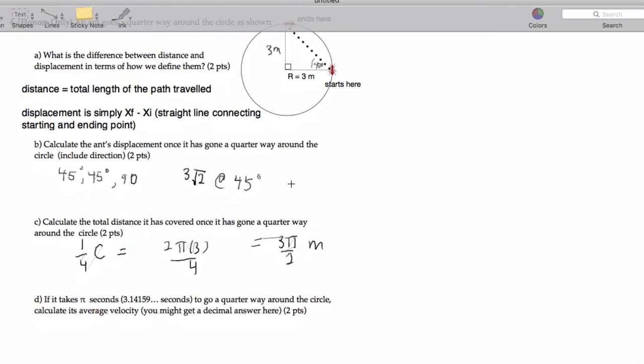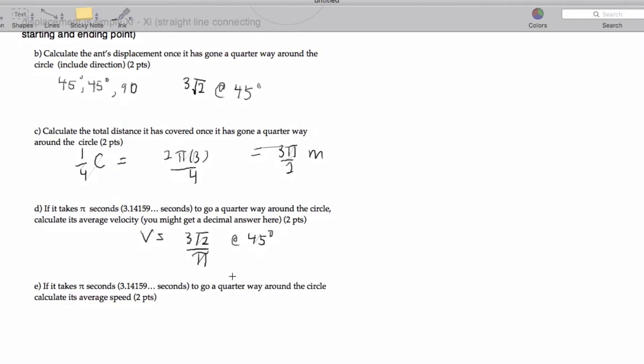Now, here it says it takes pi seconds to go a quarter way around the circle. Calculate the average velocity. Let's keep this simple. The average velocity is going to be my displacement divided by the time. And I'll keep that angle the same, just to be clear. You can simplify that, but I actually want to leave this sum in these terms to keep it easier.